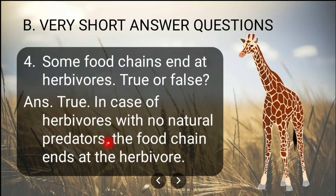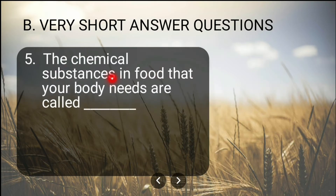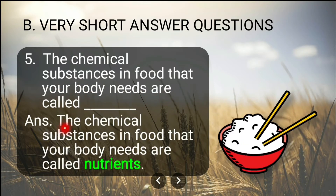Fifth question: The chemical substances in food that your body needs are called dash. Here you will write: the chemical substances in food that your body needs are called nutrients.